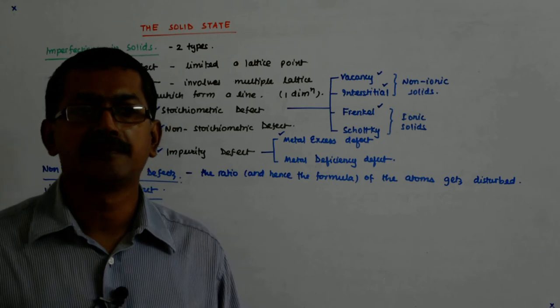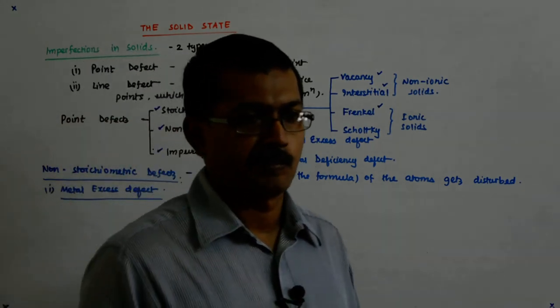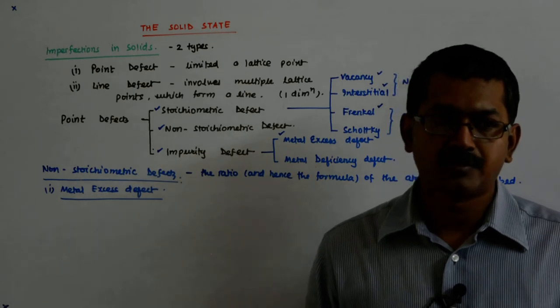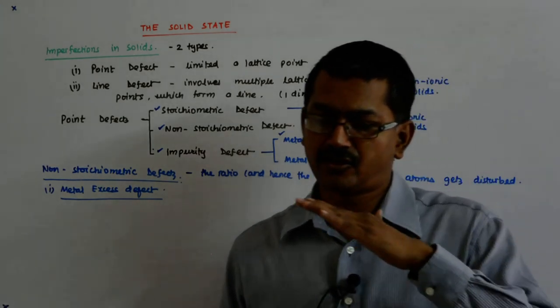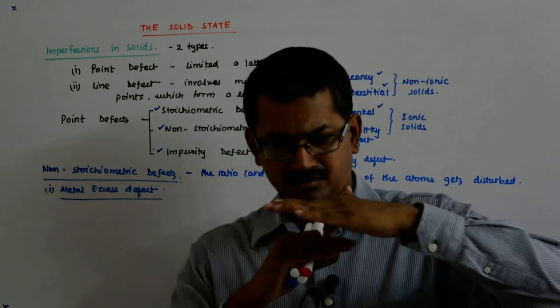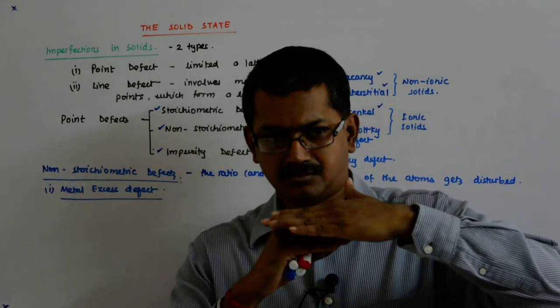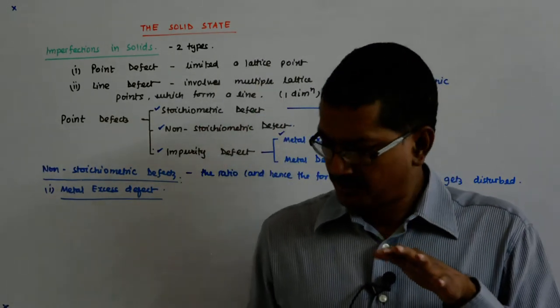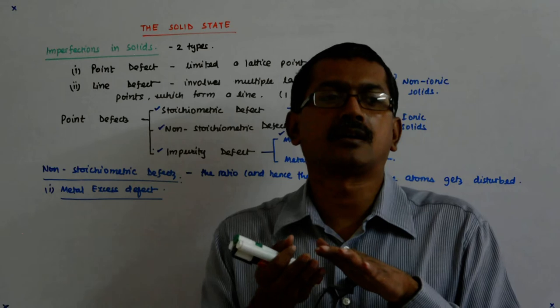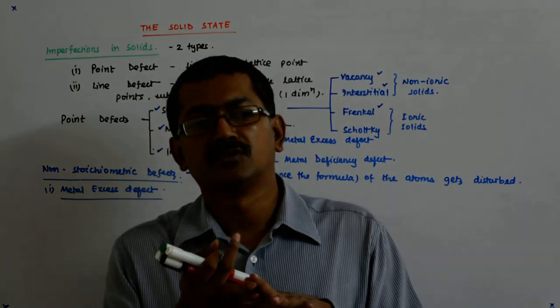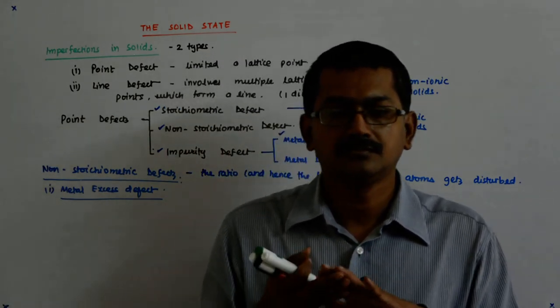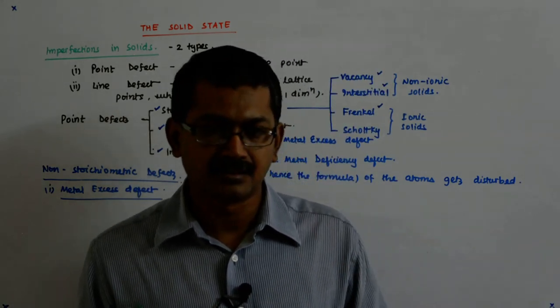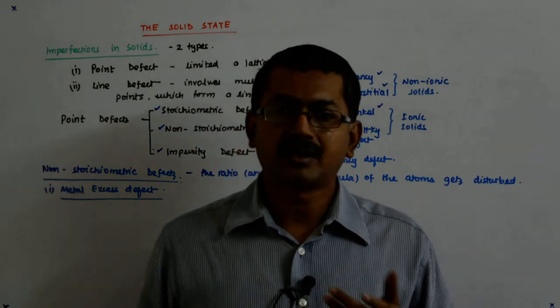Those sodium metals they start coming and getting deposited onto the surface of NaCl. Now what happens? There is an excess of Na deposited over. So due to diffusion, Cl atoms start coming towards the surface and they react and form NaCl.